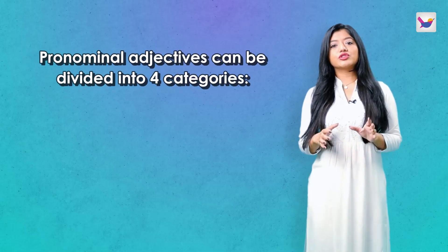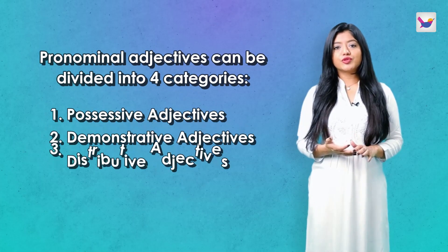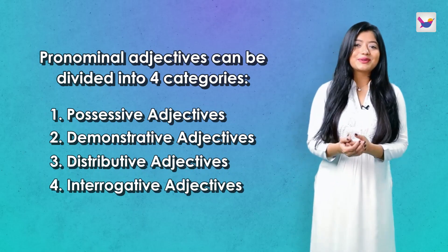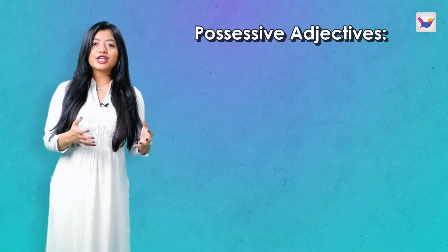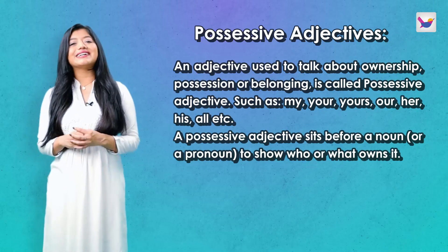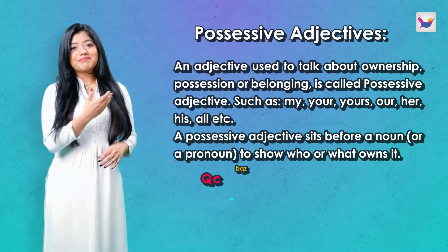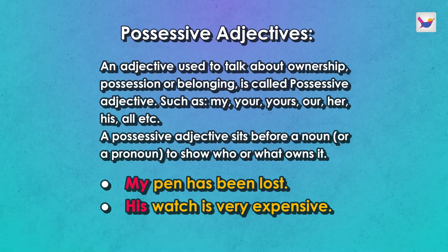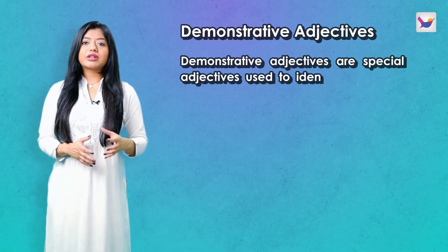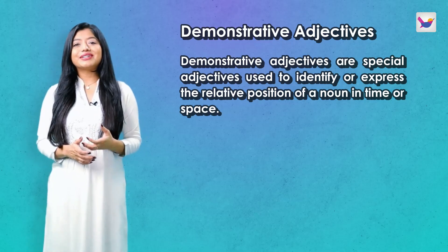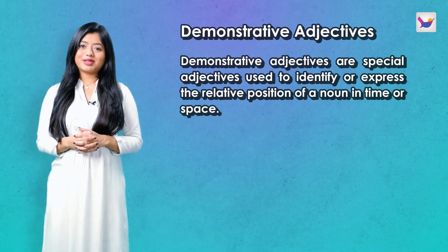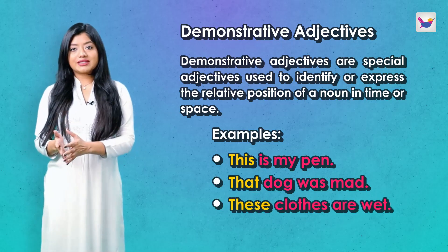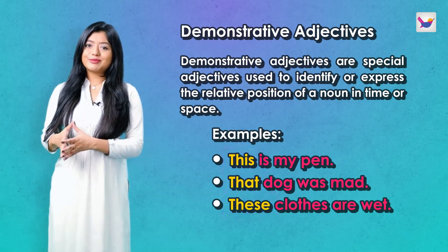Pronominal Adjectives can generally be divided into four parts: Possessive, Demonstrative, Distributive, and Interrogative Adjectives. The adjectives that sit before a noun to show ownership, possession, or belonging are called Possessive Adjectives. For example: My pen has been lost. His watch is very expensive. Here the bold words are Possessive Adjectives. The Demonstrative Pronoun that sits before a noun, qualifies it and indicates its position, is called a Demonstrative Adjective. For example: This is my pen. That dog was mad. These clothes are wet. The bold words are Demonstrative Adjectives.